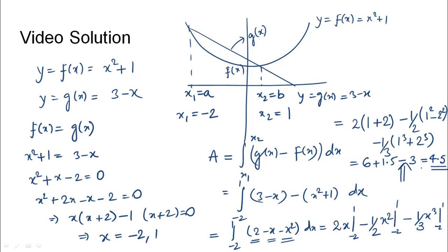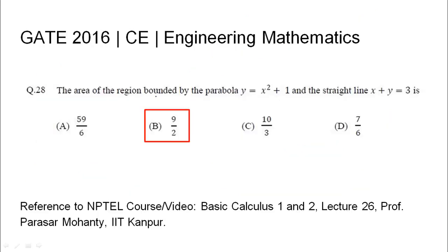This gives 6 plus 1.5 minus 3, which turns out to be 4.5. So the area bounded between the two curves f(x) and g(x) is 4.5, meaning the area of the region bounded by the parabola y equals x squared plus 1 and the straight line x plus y equals 3 is option B, that is 9/2.